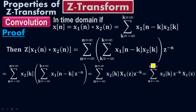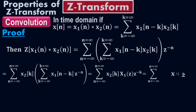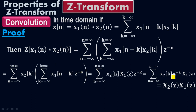Now looking at this part — summation of X2(K) times Z to the negative K — it is exactly the Z-transform equation of X2. It is like summation of X(N) times Z to the negative N, which equals X(Z). So I can write X2(Z). Since my signal is X2, I put X2(Z), giving X2(Z) times X1(Z).